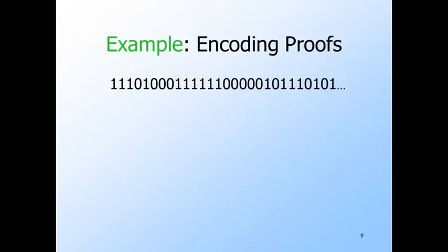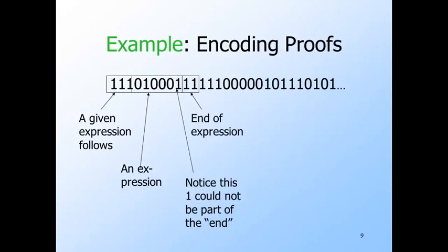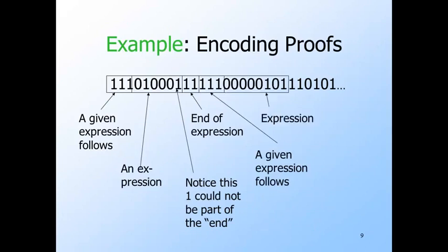Here's an example of what a proof as a binary string could look like. The initial 111 can only mean that the expression to follow is a given expression. Here is the expression itself — it was originally 101, but we expanded it with a zero in front of each symbol. This 11 marks the end of the first expression. Notice that this one cannot be part of a special marker, since all expressions without the special markers have even length. Here's another given marker, and another expression — this one was 0011 with zeros embedded — and another expression ender, and so on.